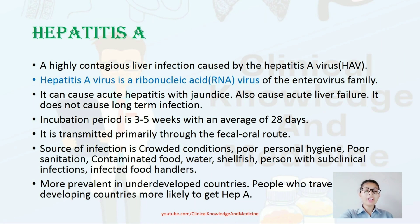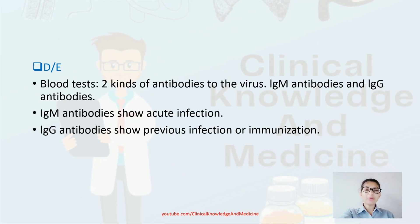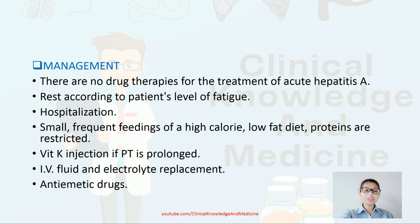Sources of hepatitis A infection include crowded conditions, poor personal hygiene, poor sanitation, contaminated food and water, shellfish, person-to-person contact, and infected food handlers. It is more prevalent in underdeveloped countries. Signs and symptoms include fatigue, nausea, vomiting, abdominal pain especially on the upper right side, clay-colored bowel movements, loss of appetite, low-grade fever, dark urine, joint pain, yellowing of skin and eyes (jaundice), and intense itching. Diagnosis involves blood tests for IgM and IgG antibodies — IgM indicates acute infection, IgG indicates previous infection or immunization.